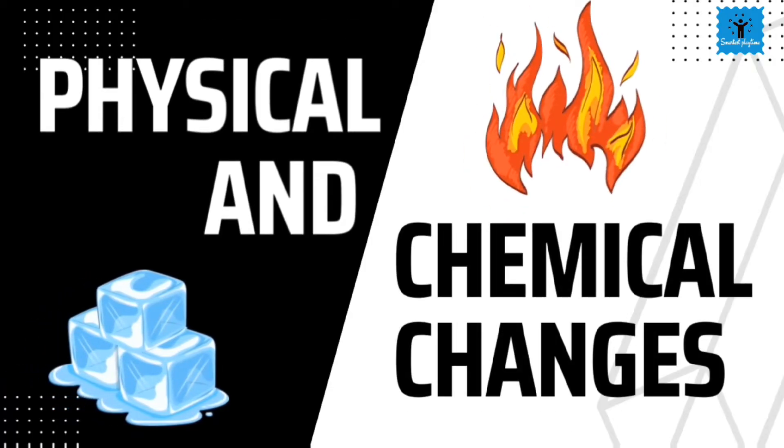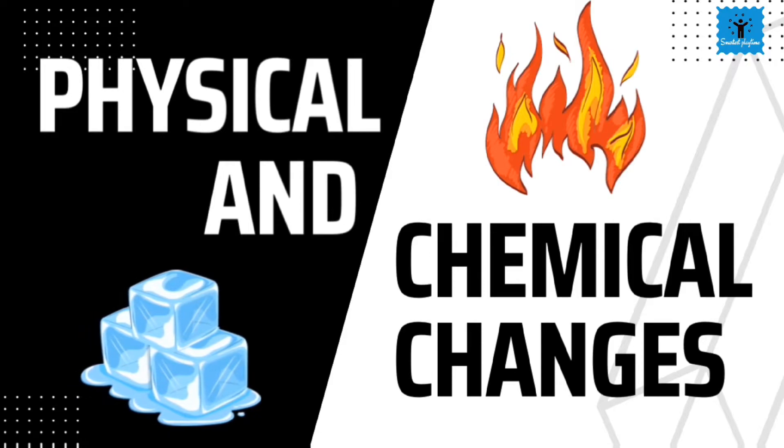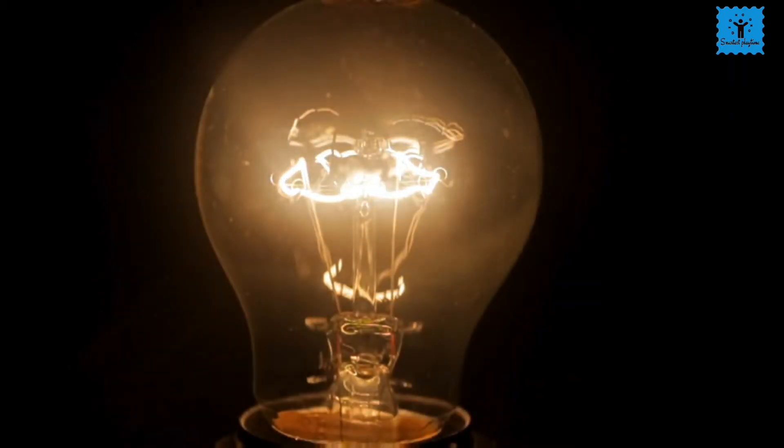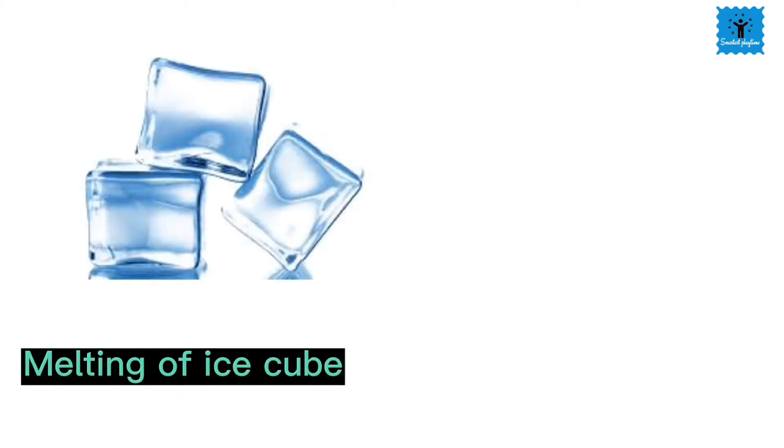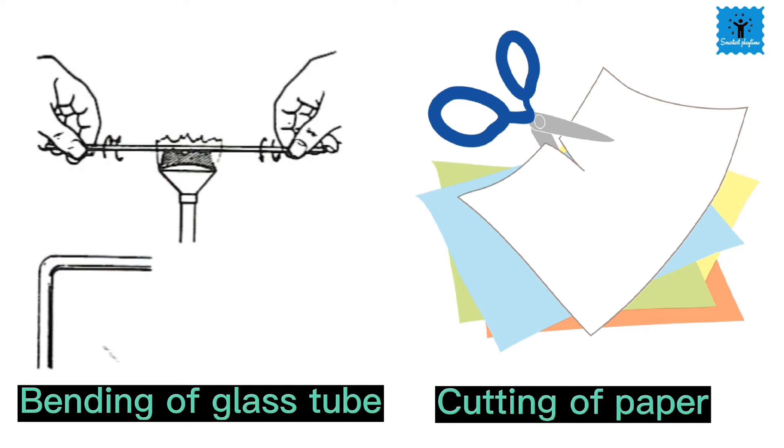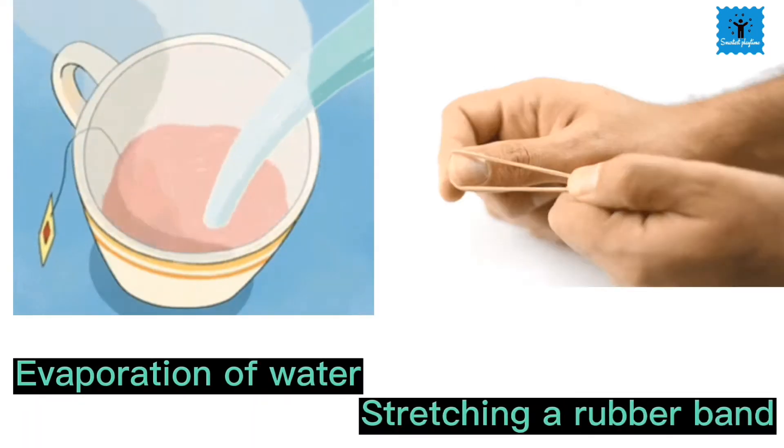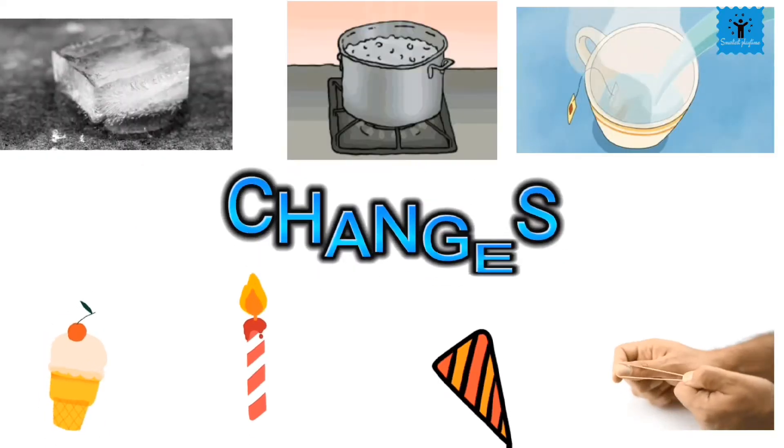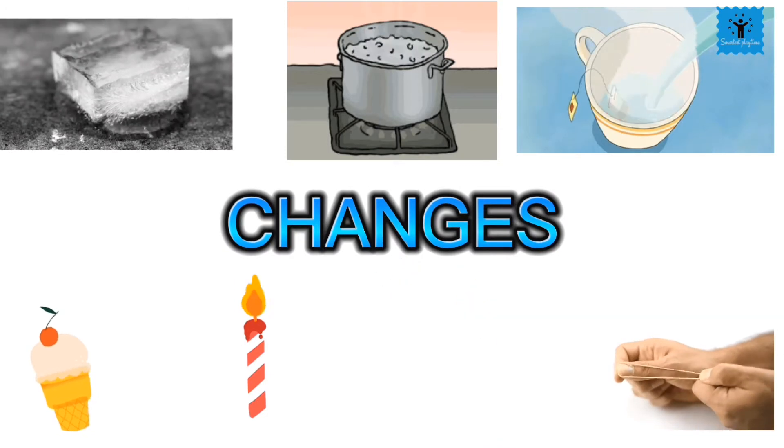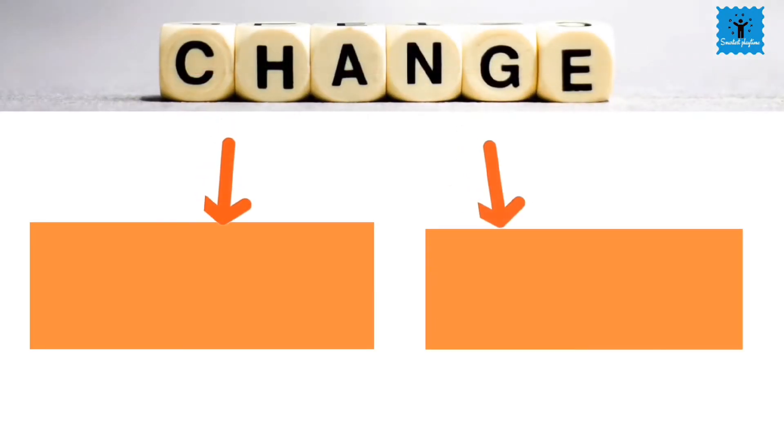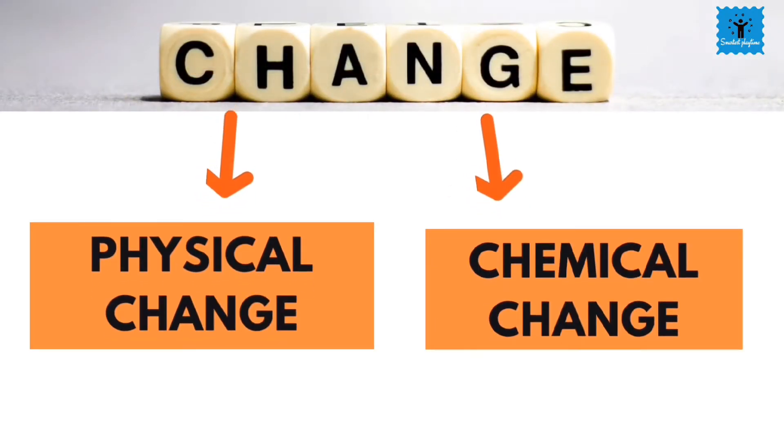Let's learn about physical and chemical changes today. Every day we come across many changes that take place all around us. For example, melting of ice, making of ice cream, bending of glass tube, cutting of paper, evaporation of water, stretching a rubber band, melting of wax, boiling of water. All these are examples of changes. These changes may include one or more substances. Broadly, we classify these changes into two categories: physical change and chemical change.